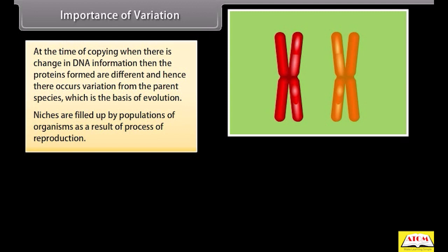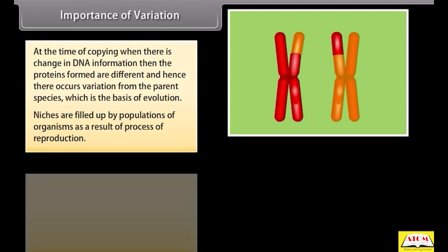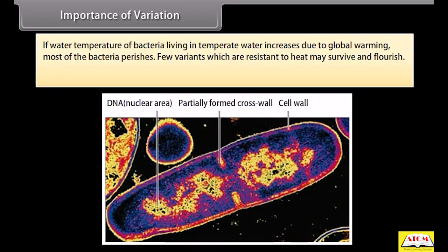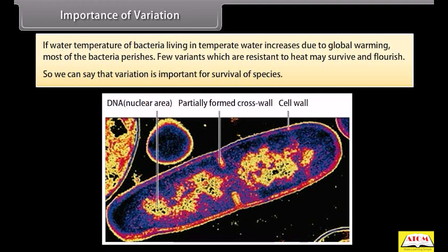Niches are filled up by populations of organisms as a result of reproduction. Due to external factors like change in temperature, water level, or meteorite hits, there is drastic change in a niche, and as a result the entire population may perish. However, few individuals may survive. For example, if the water temperature of bacteria living in temperate water increases due to global warming, most bacteria perish, but few variants resistant to heat may survive and flourish. So variation is important for the survival of species.